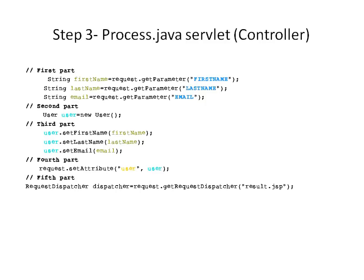In the fifth part, we need to call request.getRequestDispatcher, providing our resource name, which will return a RequestDispatcher object. With this object we can forward a client request to a resource — a servlet, JSP, or HTML on the server. In our case, our resource is Result.JSP. We then call dispatcher.forward, which allows one servlet to do preliminary processing of a request and another resource to generate the response. In our case, that resource is Result.JSP.